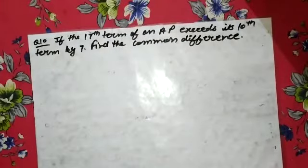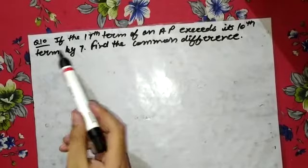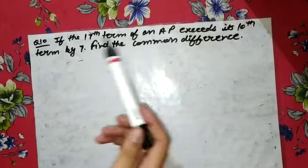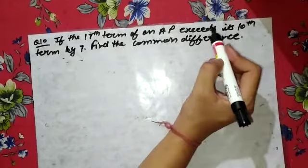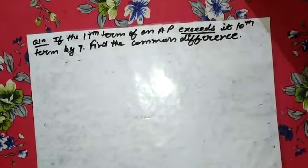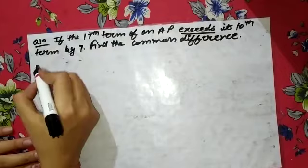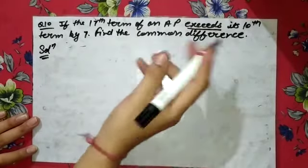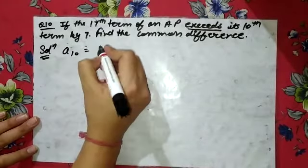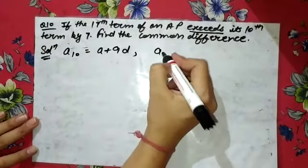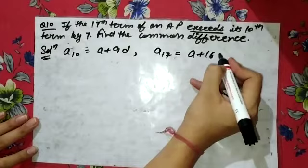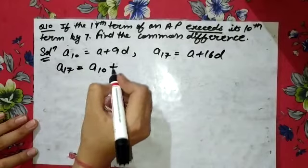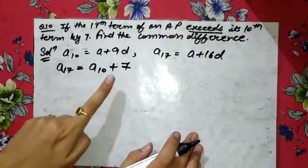Question number 10: If the 17th term of an AP exceeds its 10th term by 7, find the common difference. 'Exceeds by 7' means a17 = a10 + 7. We write a10 = a + 9d and a17 = a + 16d.